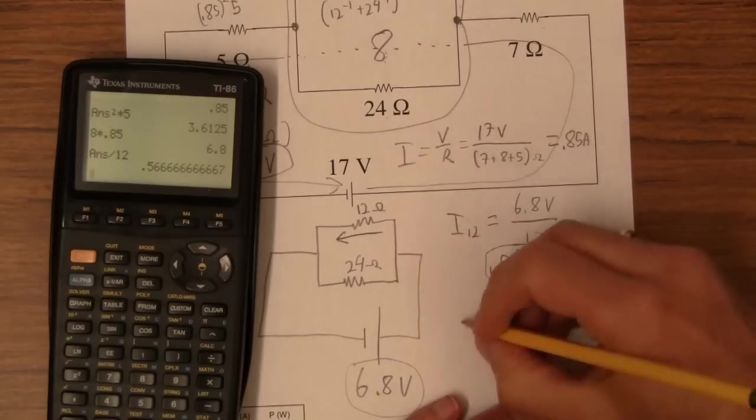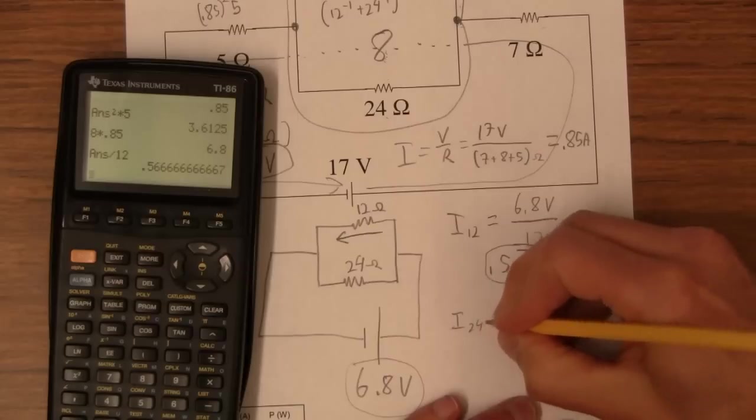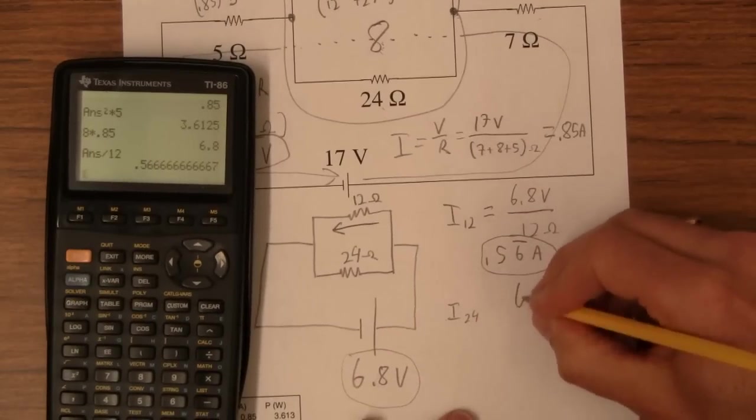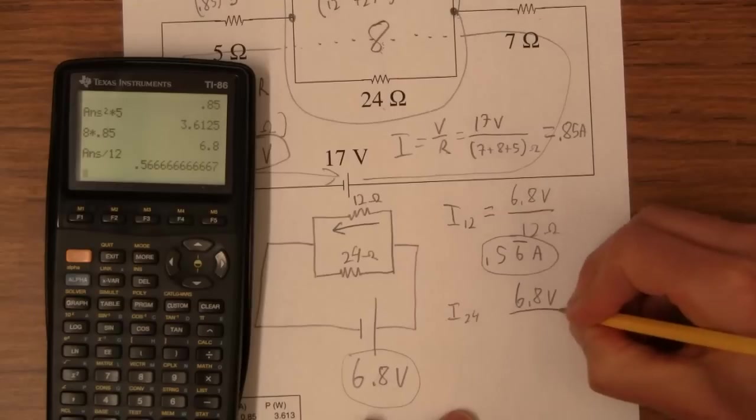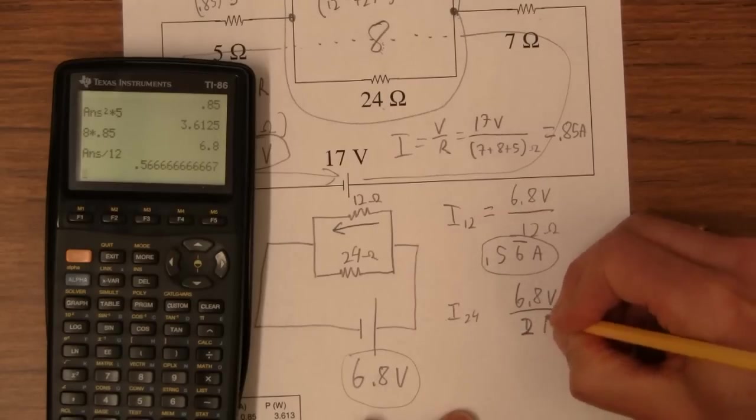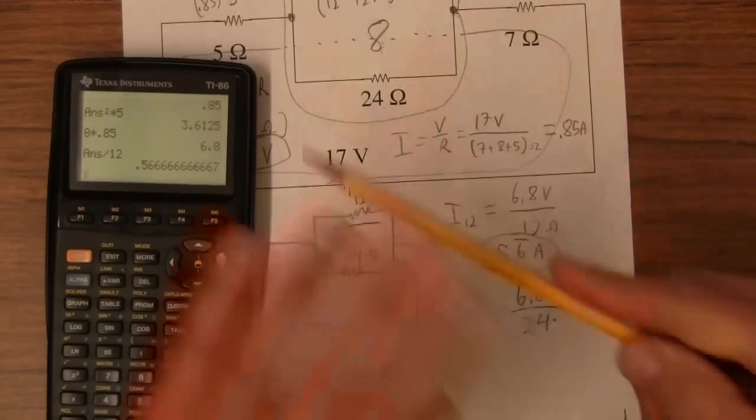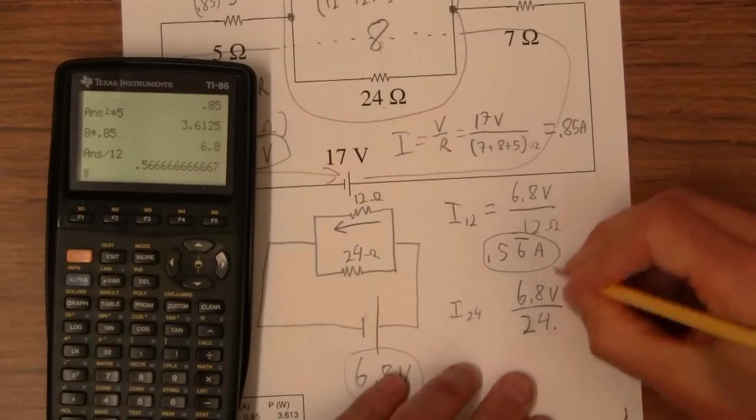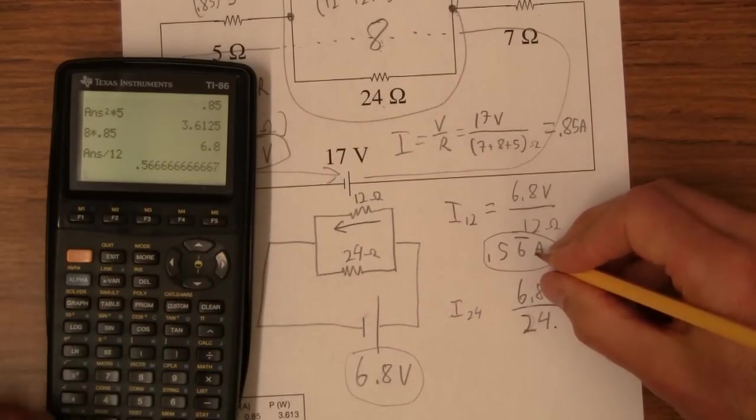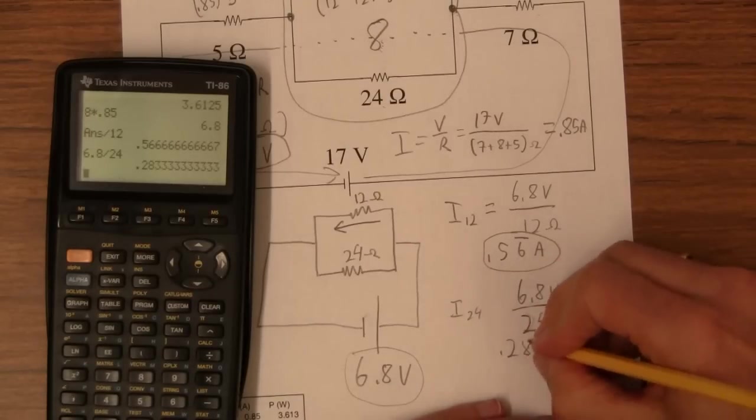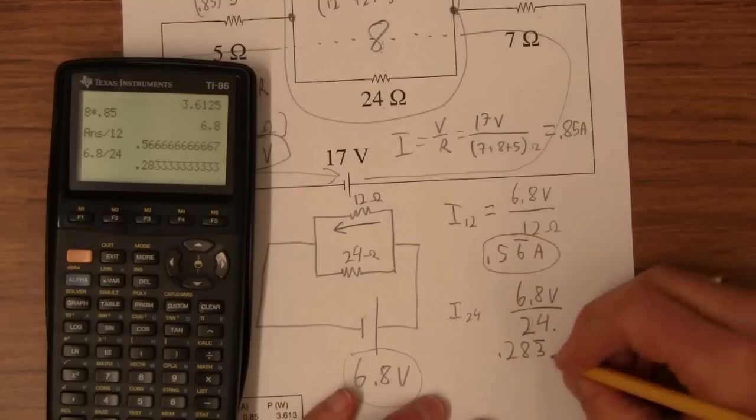And then the current through the 24 is just simply going to be, well, there's one voltage and many currents in a parallel circuit. So that's going to be 6.8 volts divided by 24. That's a 2. It's trying to be a 1, but it's a 2. Not surprisingly, it'll be half of that. So 6.8 divided by 24, and that's 0.283 bar amps.